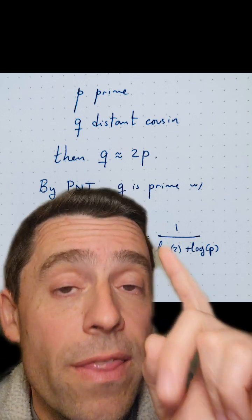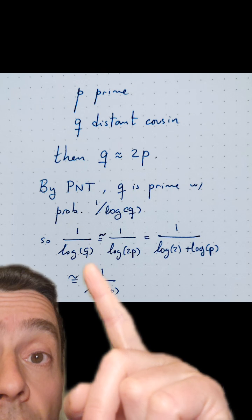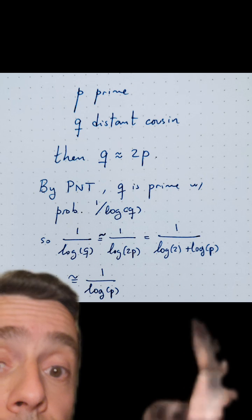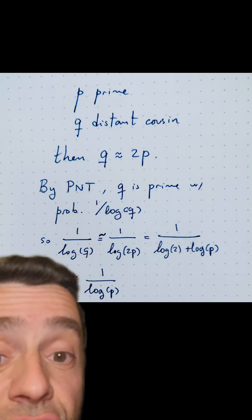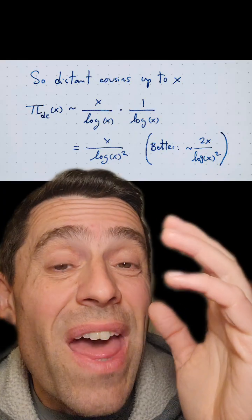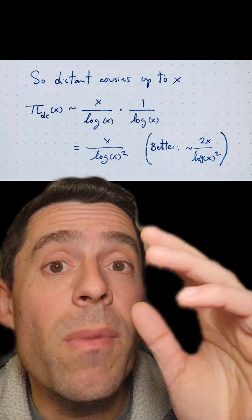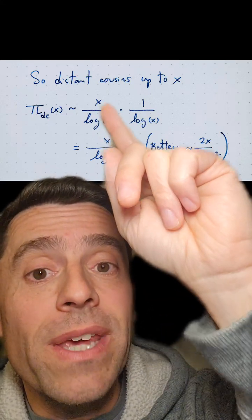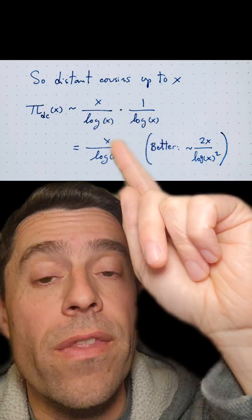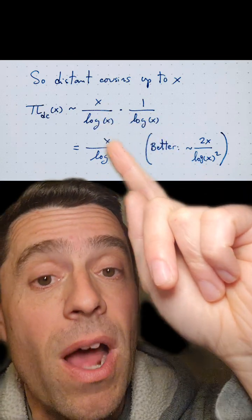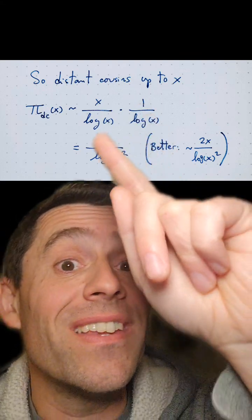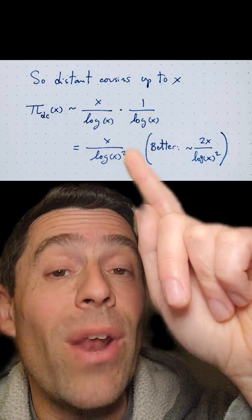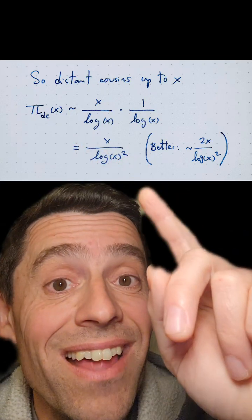Here, log is the natural log. That probability 1 over log of Q is approximately 1 over log of 2P, which is 1 over log 2 plus log P. When P is large, this is just 1 over log P. Then, following reasoning like in the prime number theorem, I can count how many distant cousin pairs there should be up to X. That should be X divided by log of X squared — that's one log X for the first number being prime, and another log X for the probability that the distant cousin is also prime.